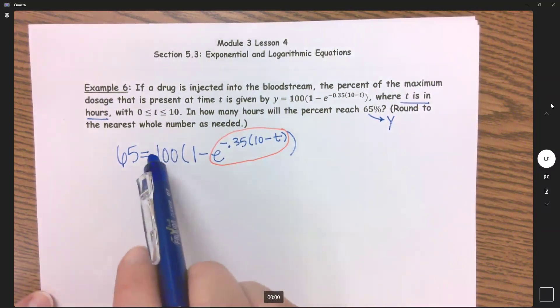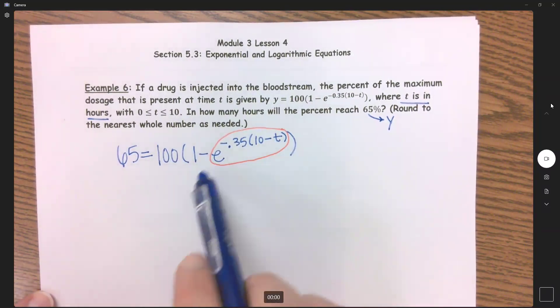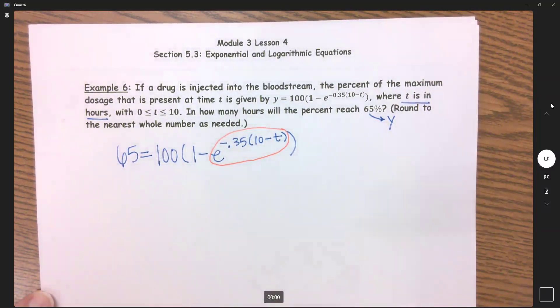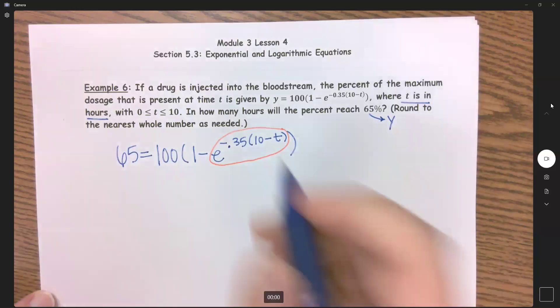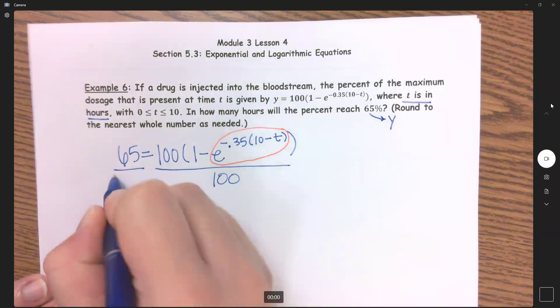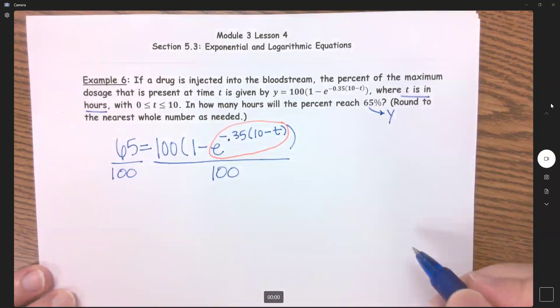You can use the distributive property and do 100 times 1 to get 100 and then 100 times negative e to get negative 100e, but the distributive property is just multiplying, so the opposite of multiplying is to divide. So instead of distributing that in, I'm going to divide that 100 over.